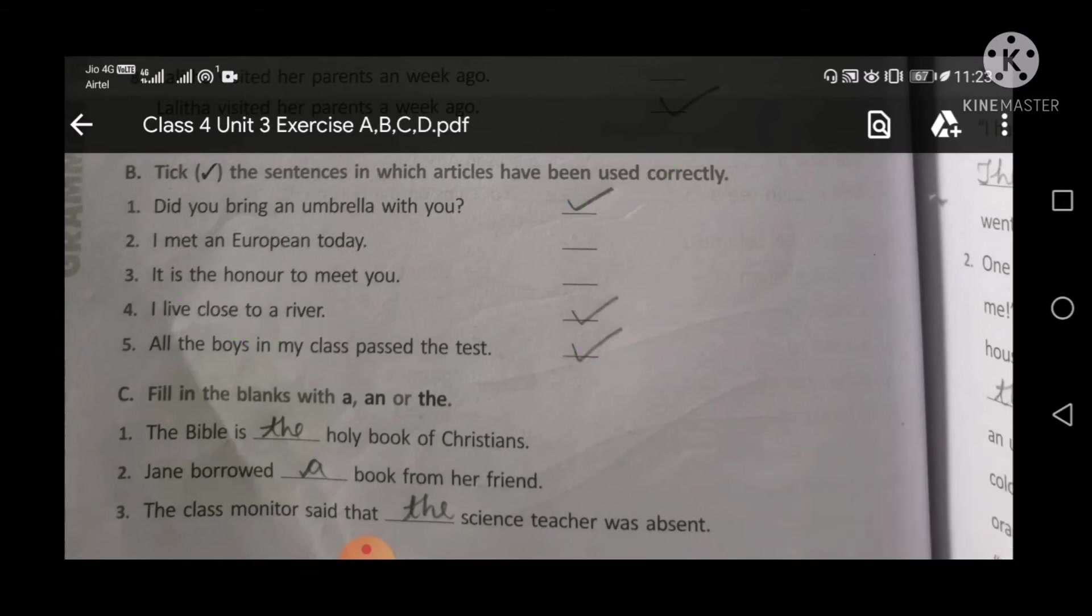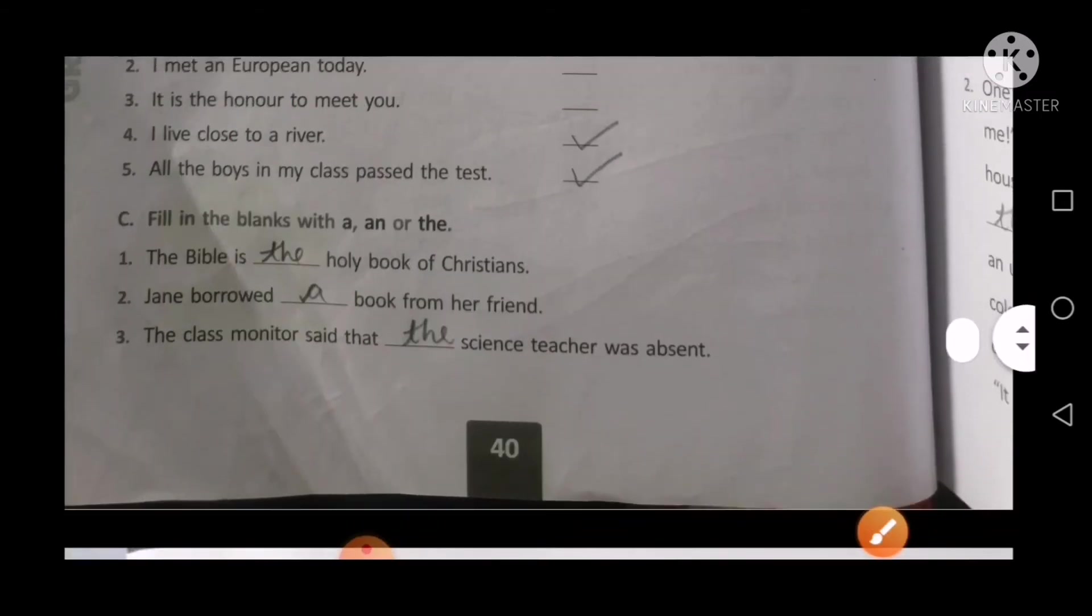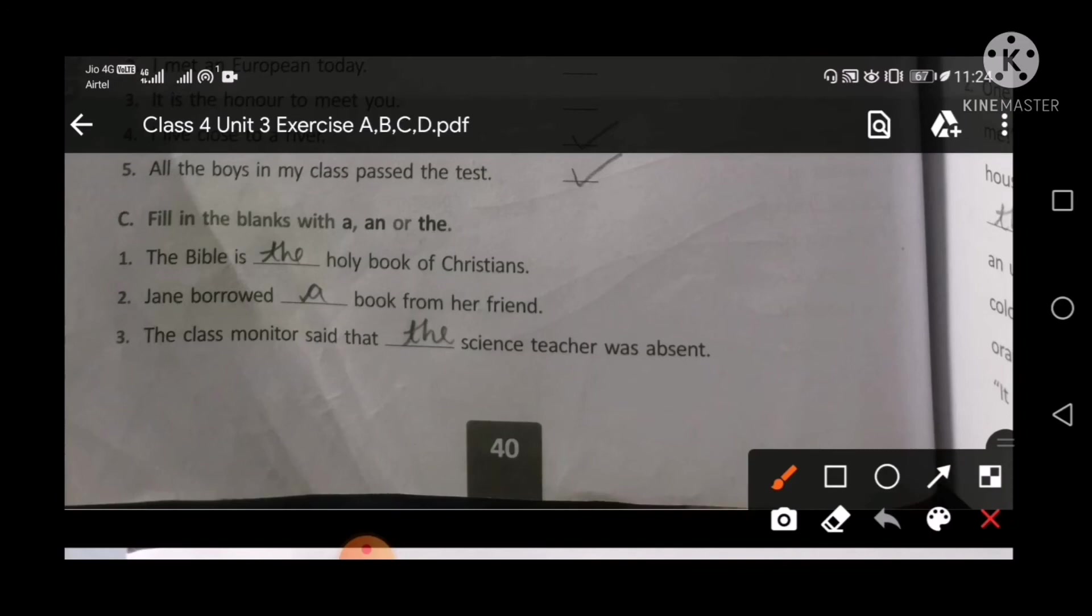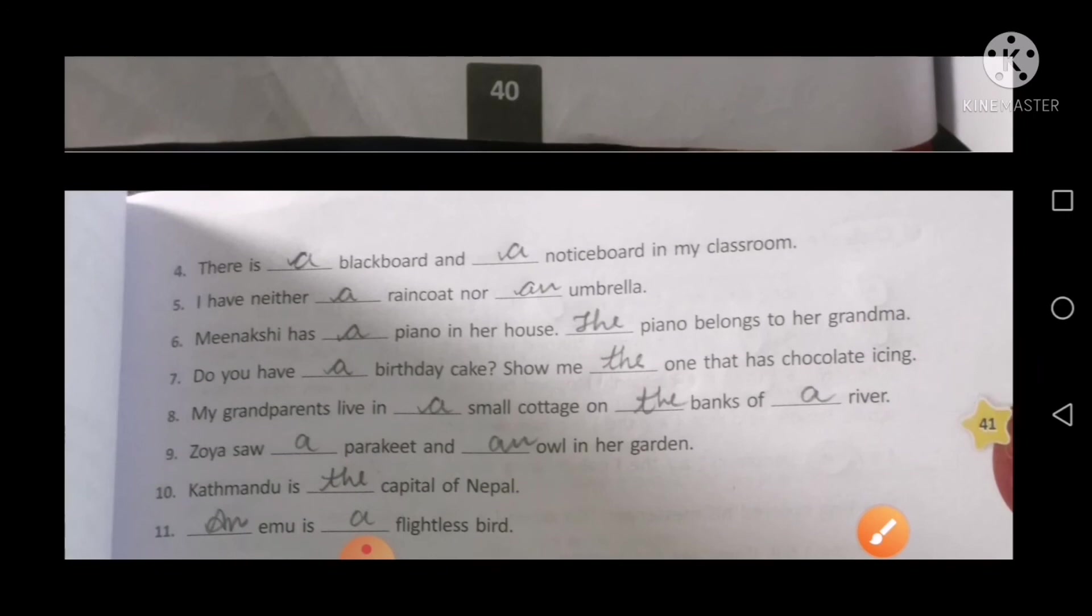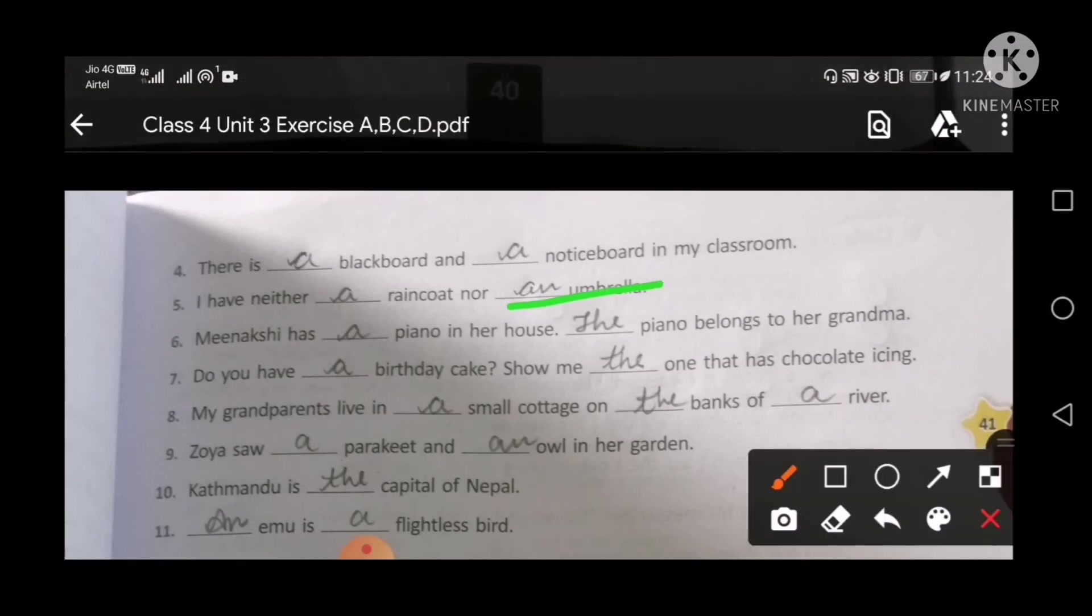Come on the next exercise C: Fill in the blanks with a, an, or the. The Bible is the holy book. Jane borrowed a book from her friend. The class monitor said that the science teacher was absent. There is a blackboard and a notice board. I have neither a raincoat nor an umbrella.